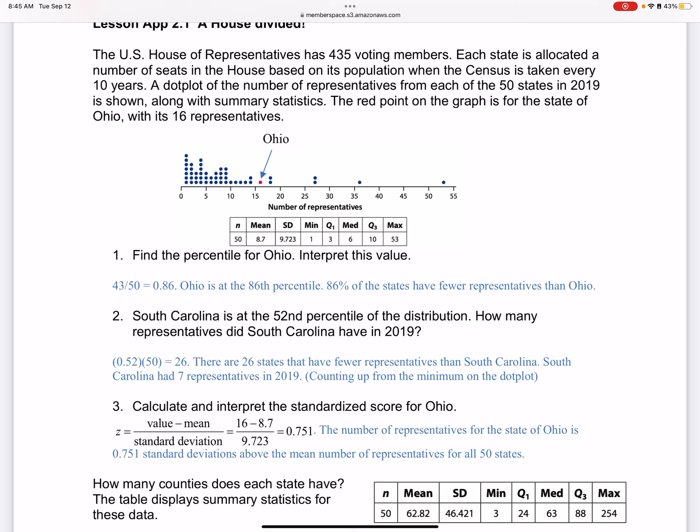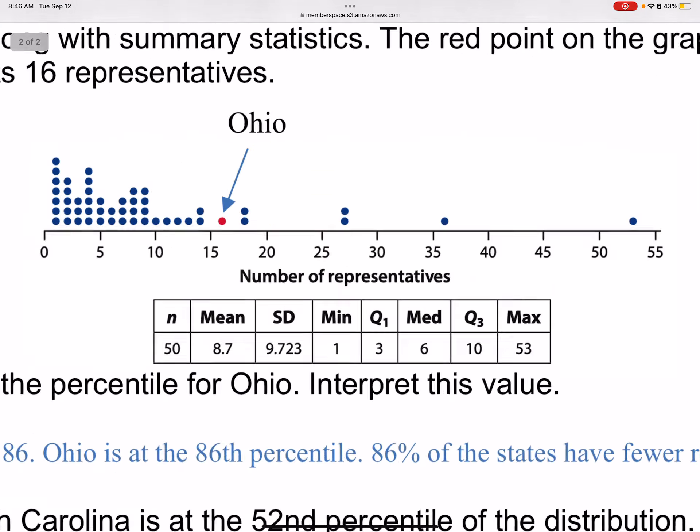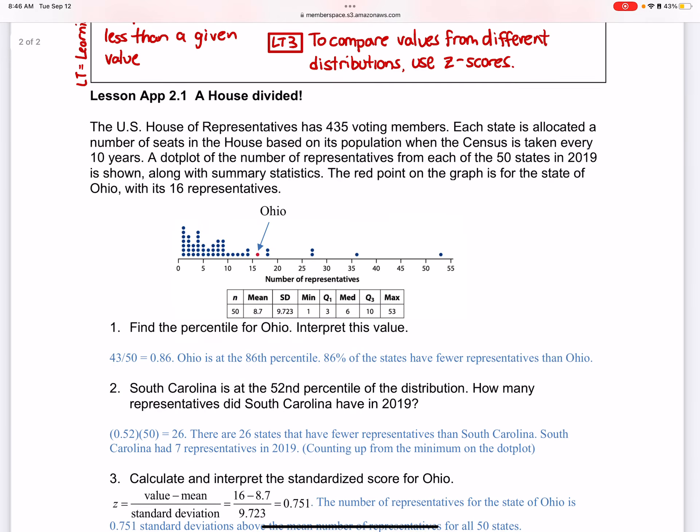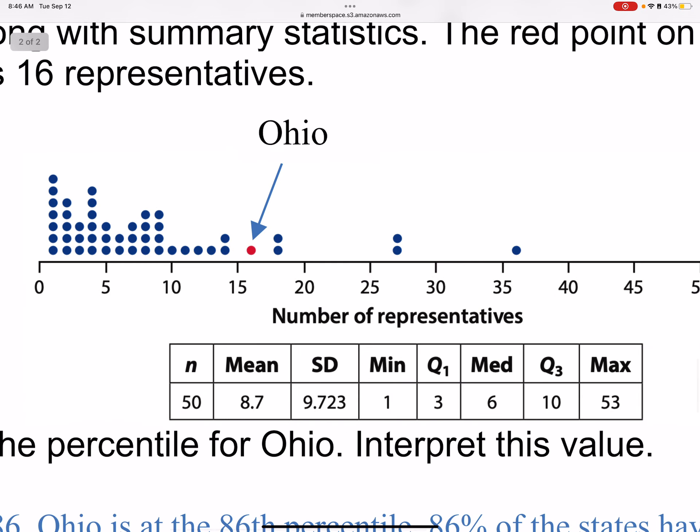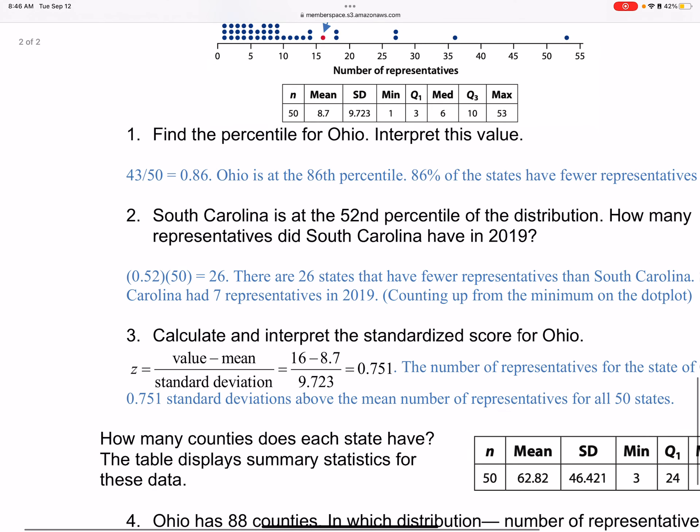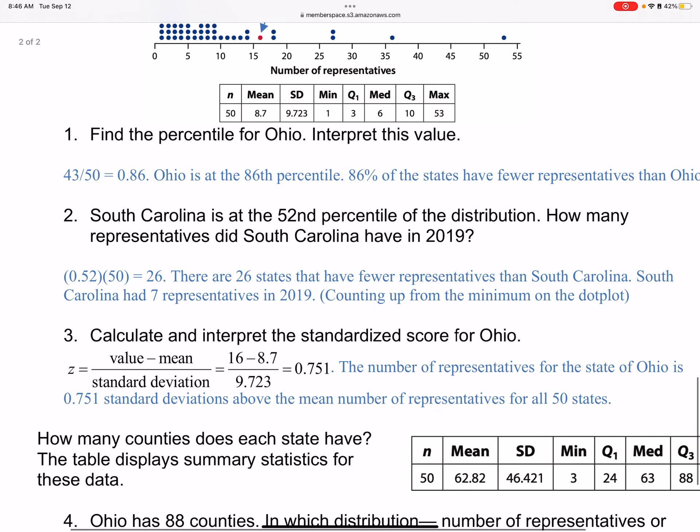Calculate the z-score. Z-score was value minus mean divided by standard deviation. The z-score for Ohio, you saw that we got 16 as the value. The mean is 8.7, and the standard deviation is 9.723. This is 0.751. To interpret that, we would say the number of representatives for the state of Ohio is 0.751 standard deviations above the mean number of reps in all 50 states.